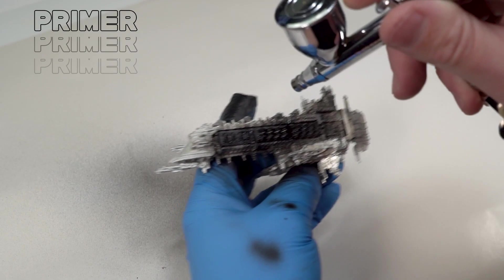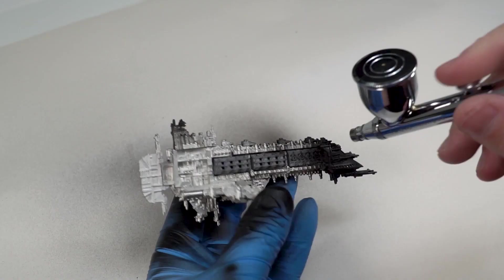Also be careful when you are putting the model down that you don't bend any of those small pieces at the base of it. Because this is going to be a dark colored model, priming with a black paint is completely fine. In this instance, we're going to be using Mission Models black primer with a touch of Vallejo airbrush thinner.